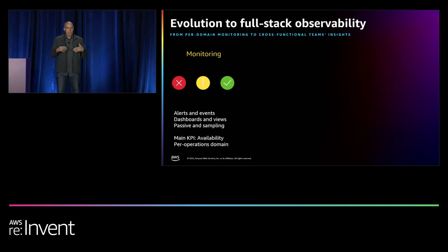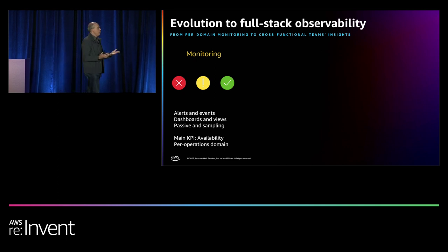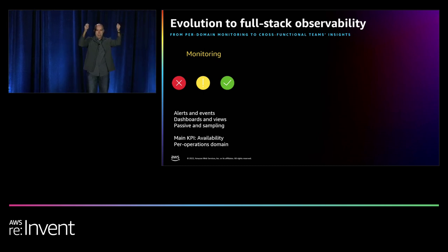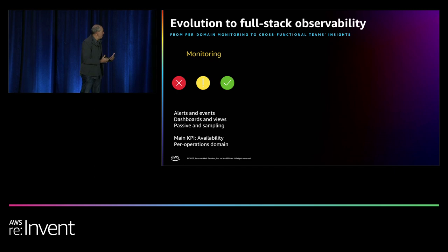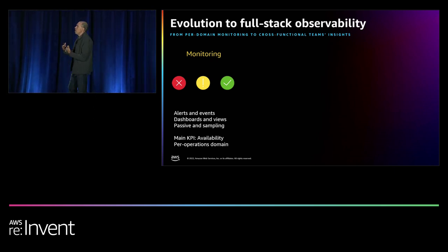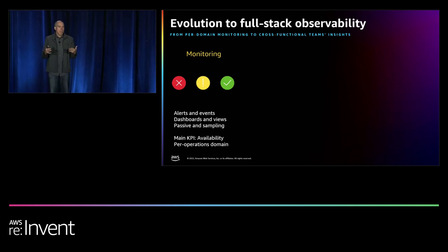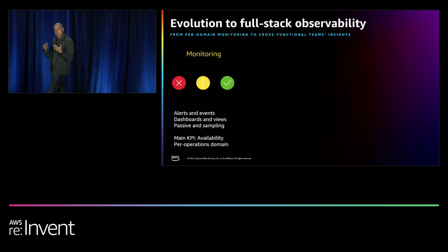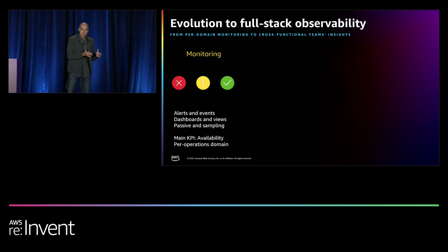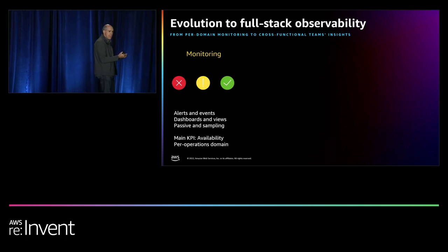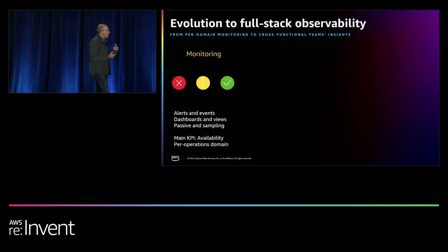The industry has been coming from monitoring for over 10 years. The final outcome of monitoring solutions was pretty much a dashboard or a view. The logic was: my dashboard better be green, because if mine is green, it's not my problem — it's somebody else's problem. Those dashboards were built on passive access to information, usually alerts and events based on sampling, where the main KPI was availability. AWS came to solve that problem by providing scale and resources on a consumption model.